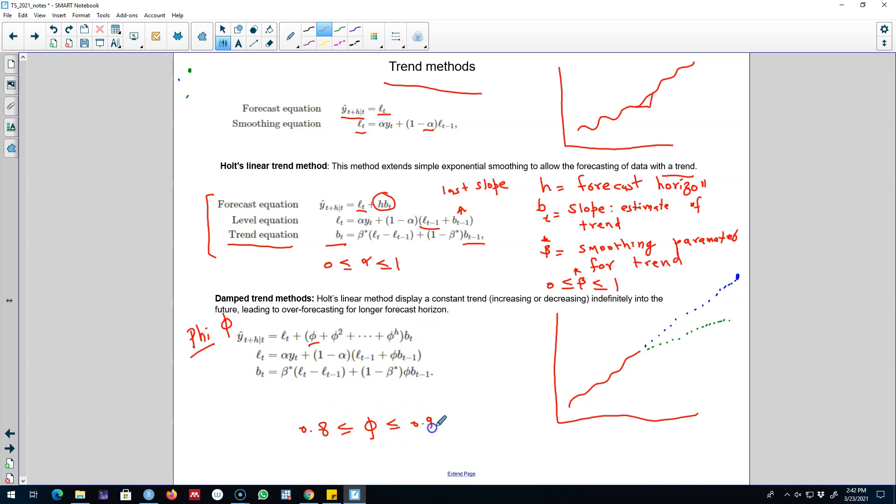Note here, if phi is exactly equal to 1, this whole term in parentheses will vanish and we'll be left out with the whole linear trend method. So if we plug in phi equals 1 in these three equations, we will be left with the whole linear trend method. Okay, let's go to R and work with an example.